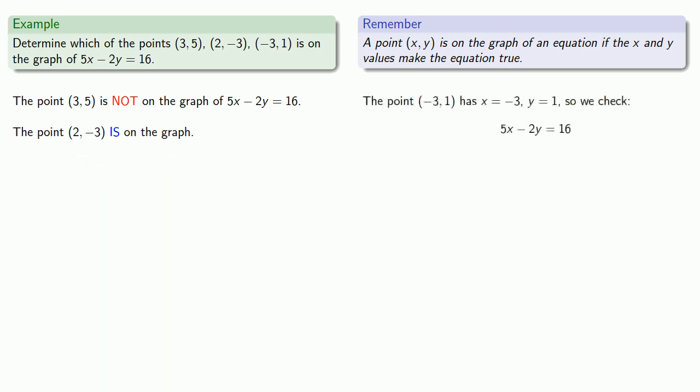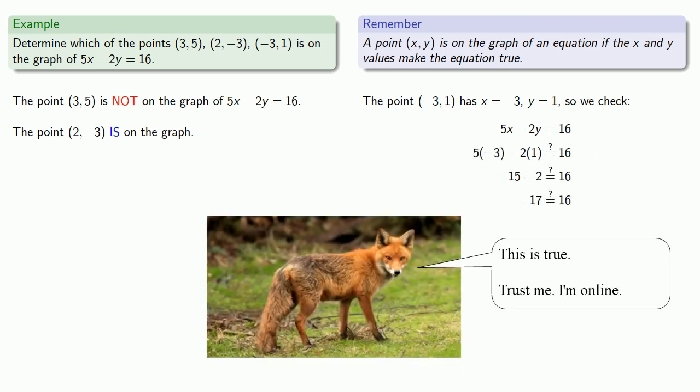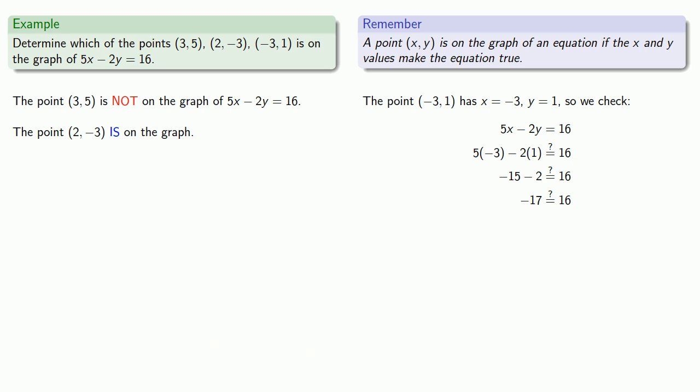So the point (-3, 1) has x equal to -3, y equal to 1. So we can check. And alternative facts notwithstanding, this statement is false, and so we know that the point (-3, 1) is not on the graph.